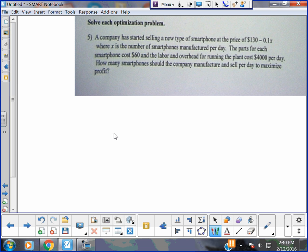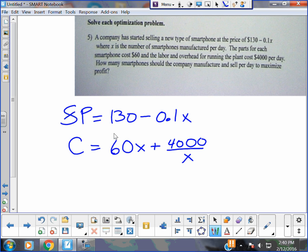Everybody, I got to figure out profit. So the selling price of the phone is given up there as a formula. So the selling price, which I'm going to call SP, is $130 minus 0.1x, where x is the number of manufacturers. Parts for each phone cost $60. So the cost, I'm going to call it C, for every phone is 60x. You guys agree? If you have one phone it's $60, if you have 10 phones it's $600. Right, each phone is 60x. How am I going to divide up the $4000 a day? I think the $4000 gets spread equally across the number of phones.